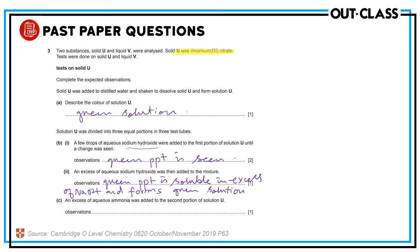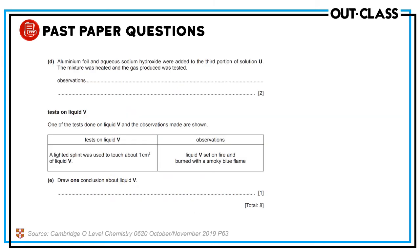An excess of aqueous ammonia was added to the second portion of solution U. With aqueous ammonia, chromium ion also forms a green precipitate, but the precipitate remains insoluble — no solubility even in excess.